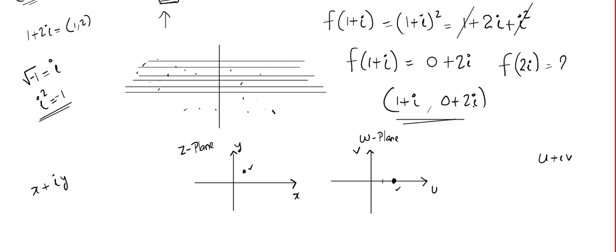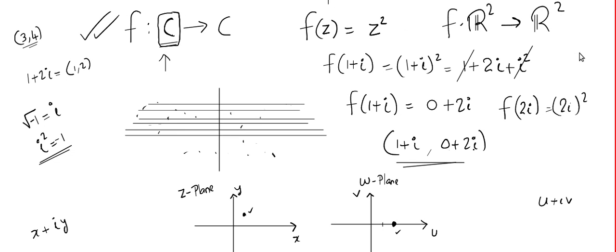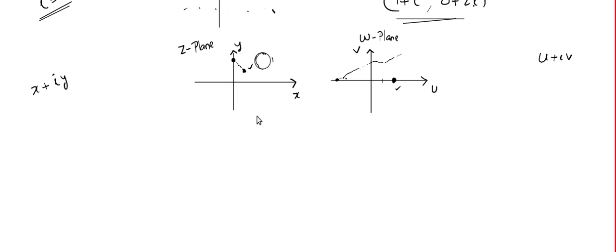If I plug in 2i, the output will be (2i)², because f(z) = z². That gives 4i², and since i² = -1, that is -4 + 0i. So the input is (0, 2) and the output is -4. Corresponding to every input here, you get an output there. Corresponding to a circle — which is made up of many, many points, each having an output — you will get some other curve on the output plane. This is how we plot complex functions.